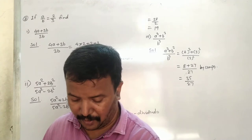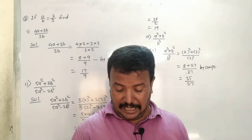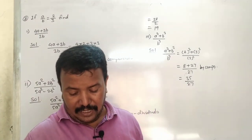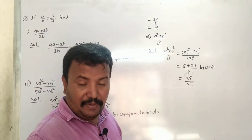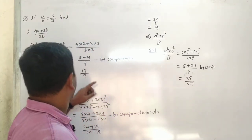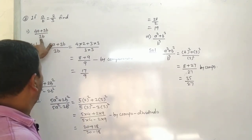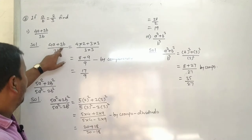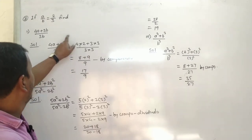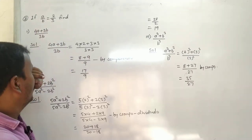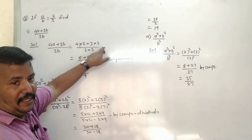Question number 8: if a upon b is equal to 2 upon 3, then find the values of the following expressions. So a upon b is equal to 2 upon 3. For the first part, find 4a plus 3b upon 3b. Since a is equal to 2 and b is equal to 3, we substitute: 4 into 2 plus 3 into 3.